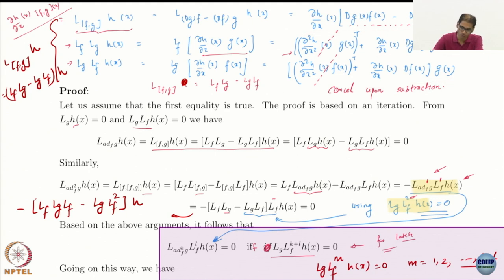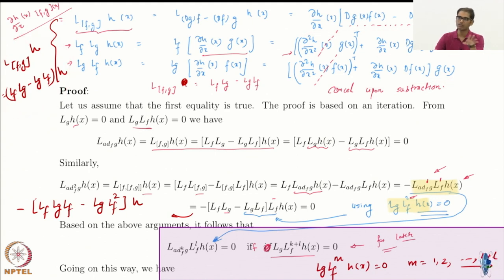So in order to prove that these two are the same, I have done nothing but write out the two formulas, cancel the cross terms, and get the result. It is very painful-looking bookkeeping, but that is all it is.